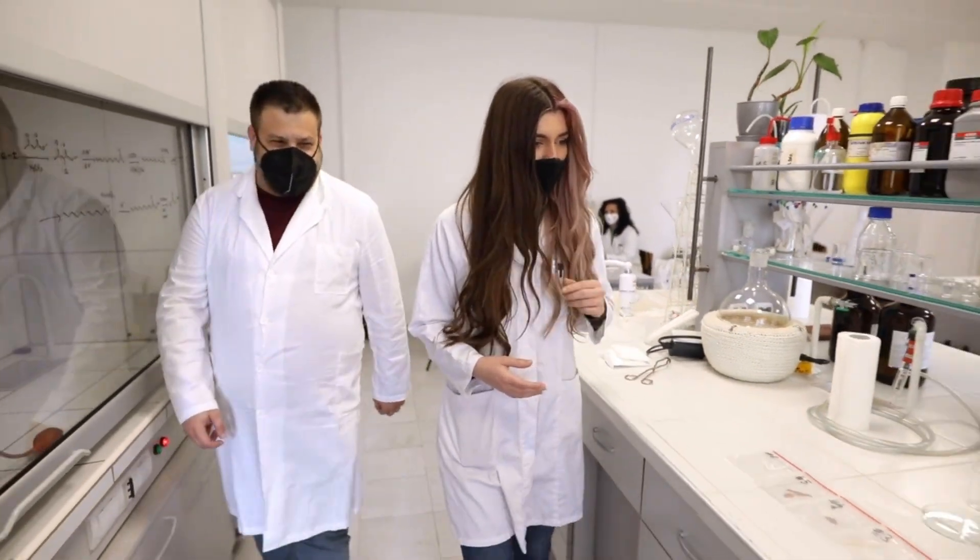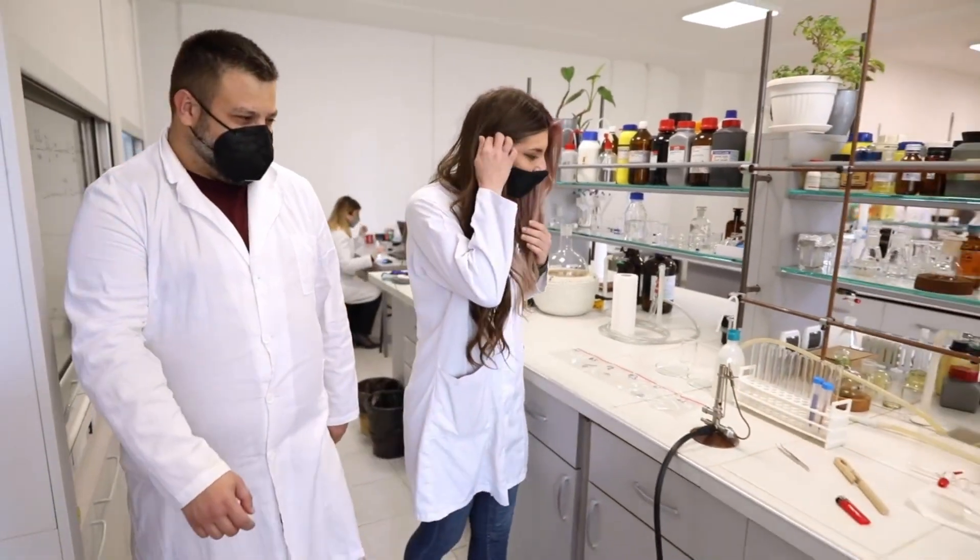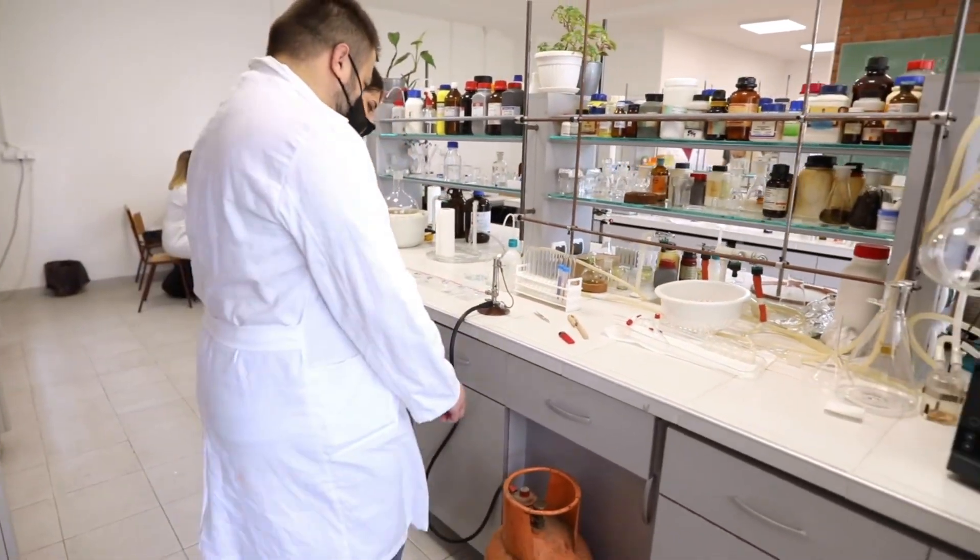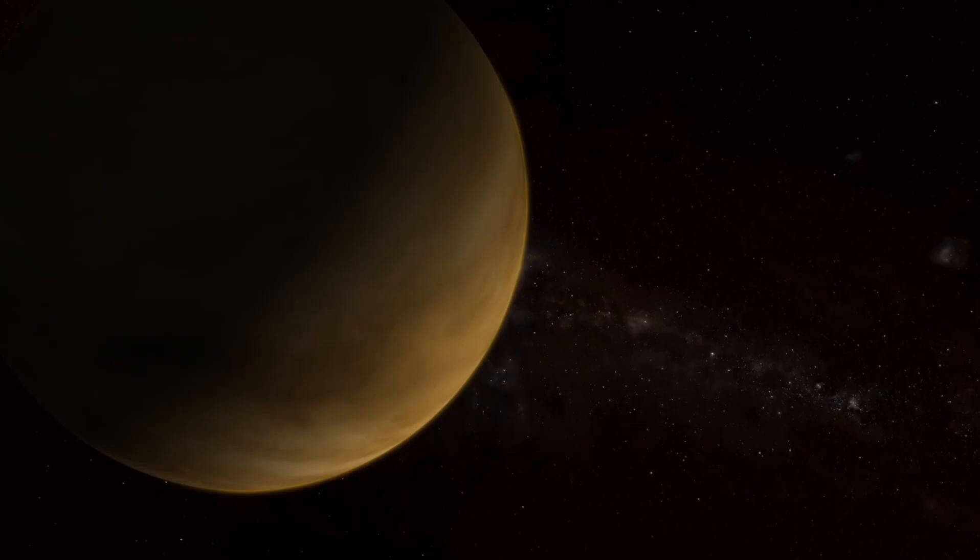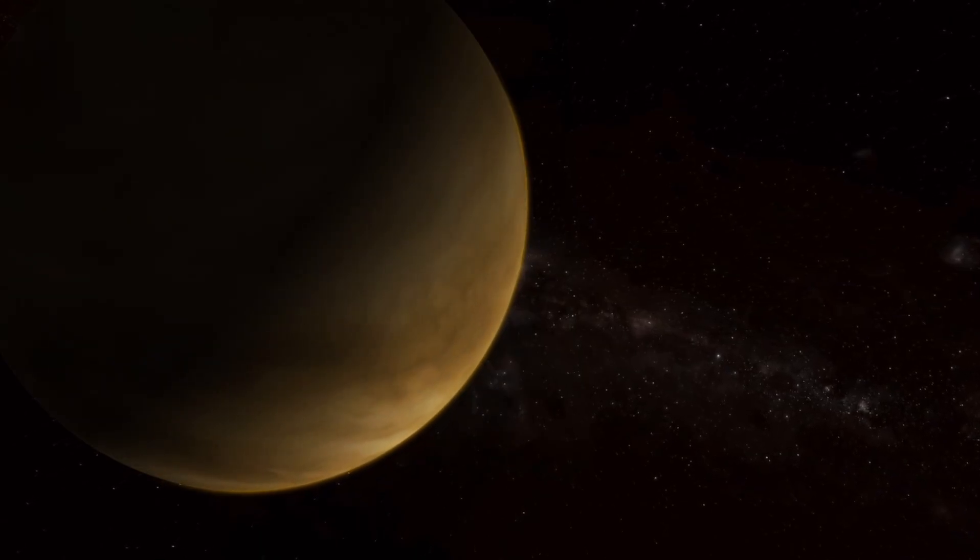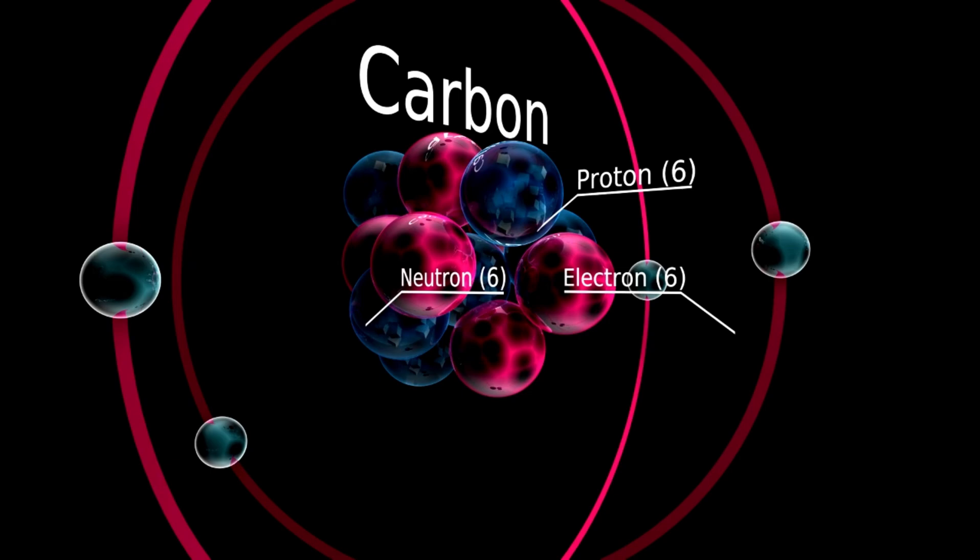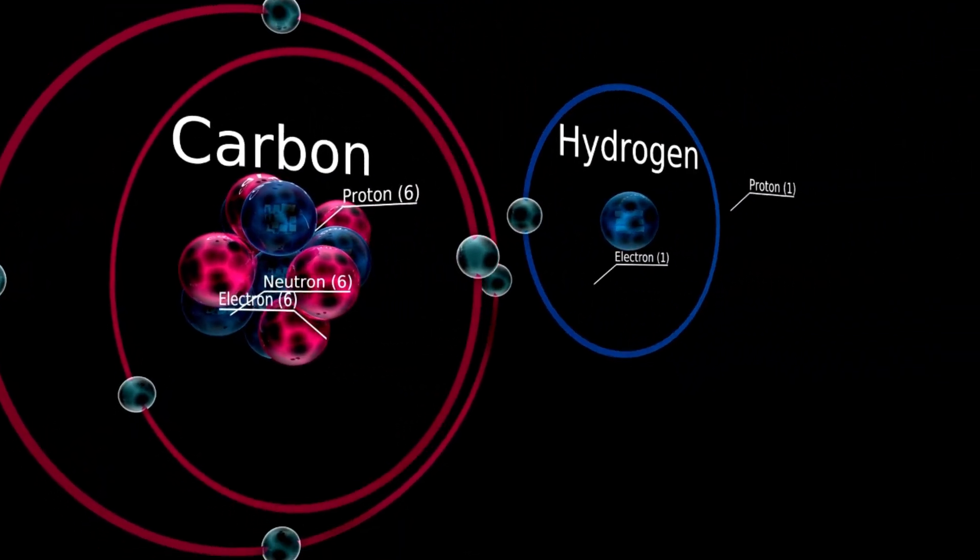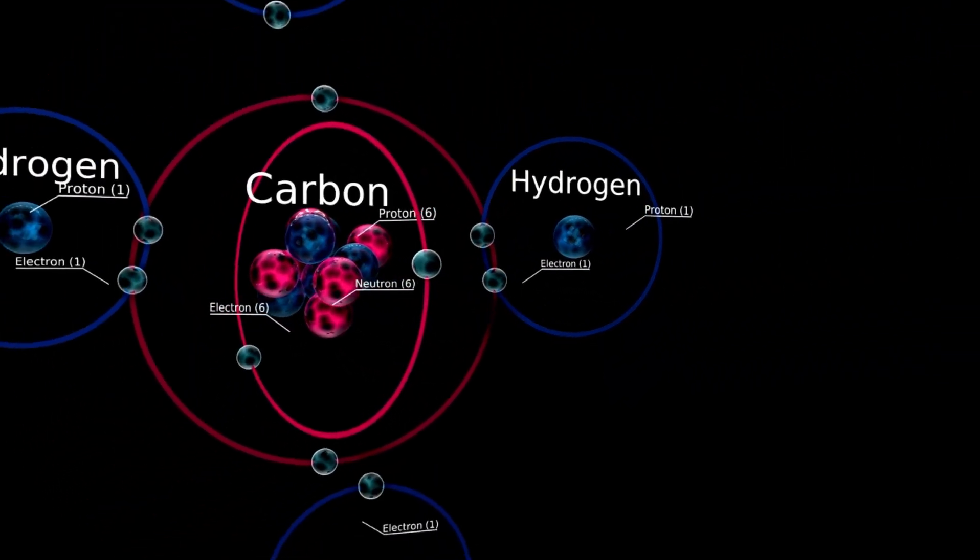If confirmed, the presence of this compound in K218b's atmosphere would mark a groundbreaking step forward in the search for extraterrestrial life. However, scientists are cautious. The evidence for dimethyl sulfide is still tentative, and more observations are needed to validate its presence.